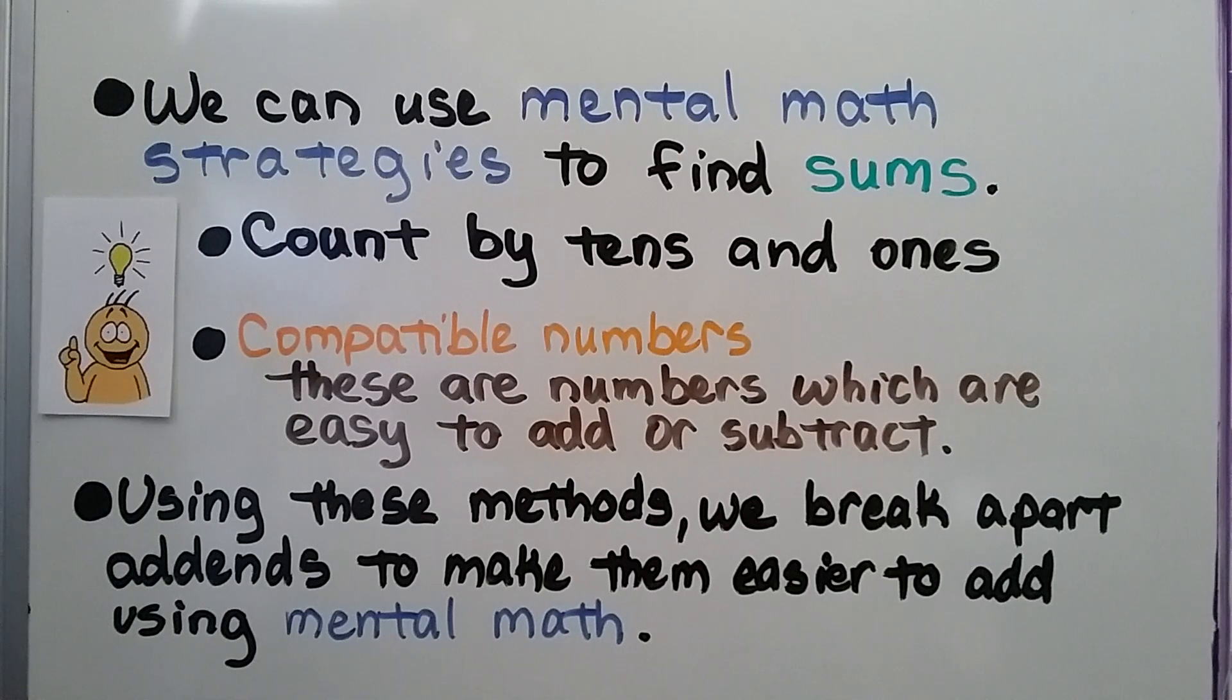We can use mental math strategies to find sums. That means we are adding just thinking in our head. We can count by tens and ones. We can also use compatible numbers, these are numbers which are easy to add or subtract. Using these methods, we break apart addends to make them easier to add using mental math.